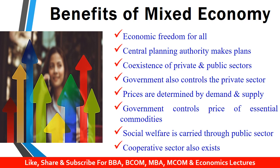But in case of essential commodities, or in the time of emergencies and shortages, the prices are controlled and regulated through the public distribution system. In a mixed economy, the private sector works with the motive to earn profit, whereas the government through the public sector carries out social welfare activities. The cooperative sector also exists, and the government provides financial assistance to it, which is linked to agriculture, industry, warehousing, and dairy. All private companies have freedom to produce, but the government also keeps check on the monopolistic activities of these private firms.